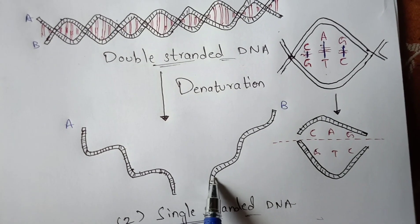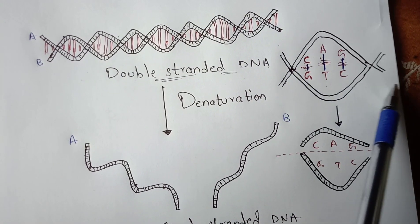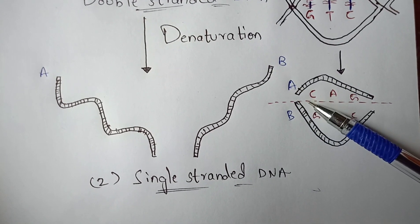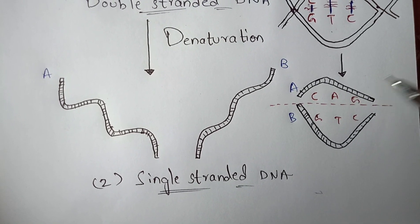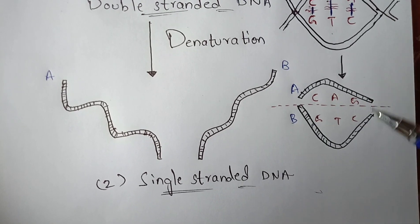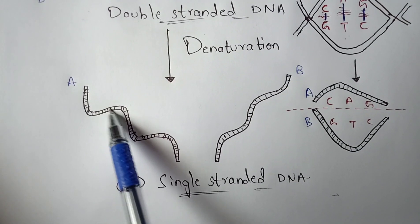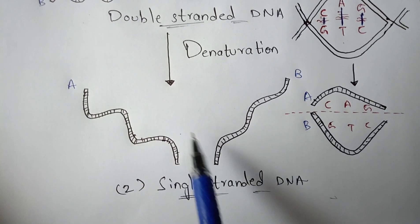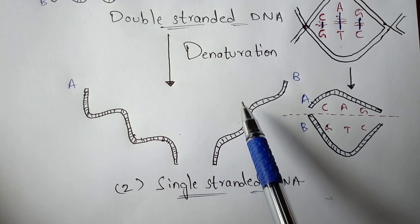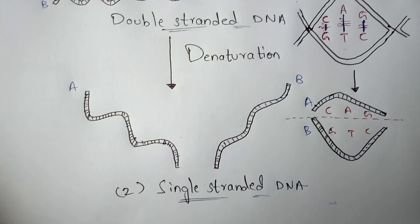Strand A mainly consists of cytosine, adenine, and guanine (CAG) nucleotides, and this pattern repeats along the strand. Strand B consists of the complementary nucleotides — guanine, thymine, and cytosine (GTC), repeated along its length. These are the nucleotide base pairs present on the single-stranded DNAs after separation.